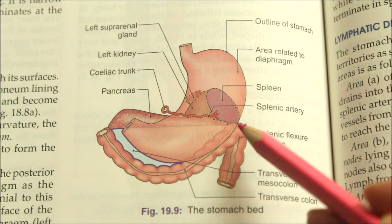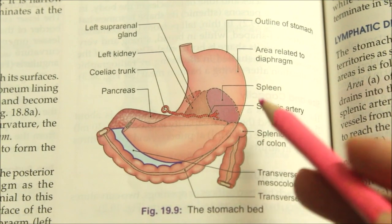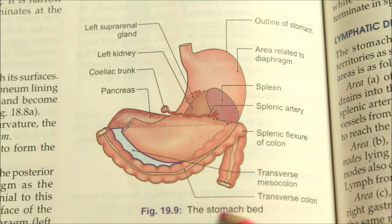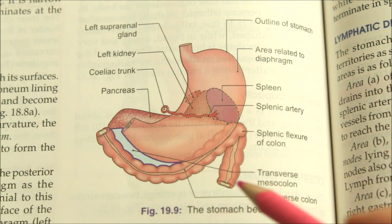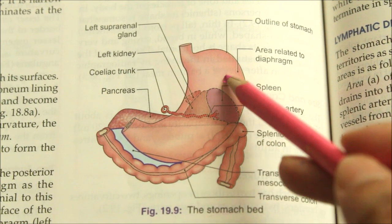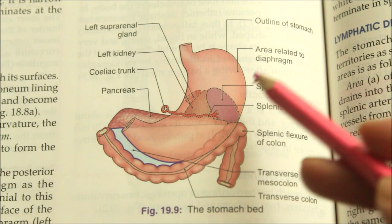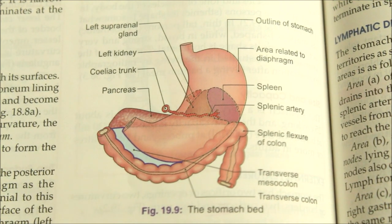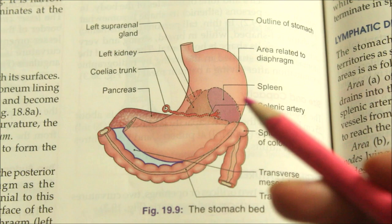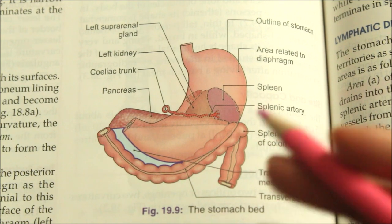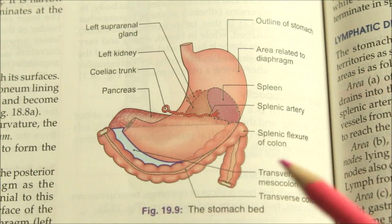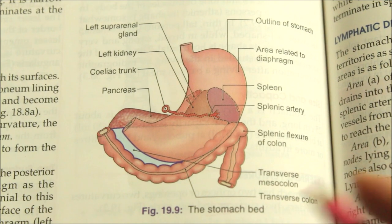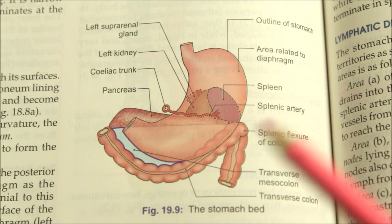The posterior surface of the stomach is related to structures forming the stomach bed, all of which are separated from the stomach by the cavity of the lesser sac. The lesser sac, also called the omental bursa, is the cavity in the abdomen formed by the lesser and greater omentum.